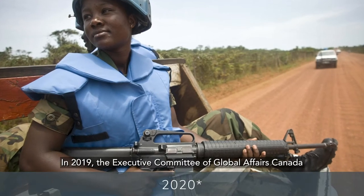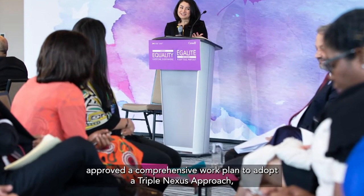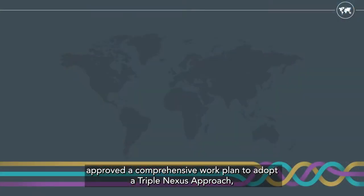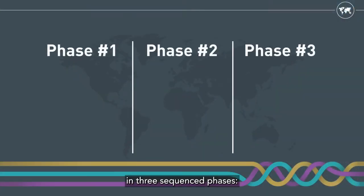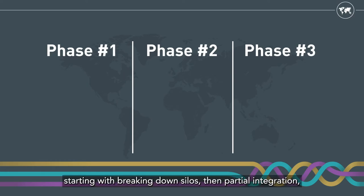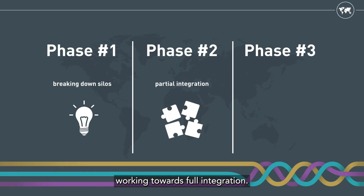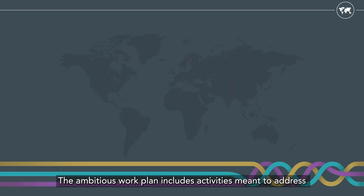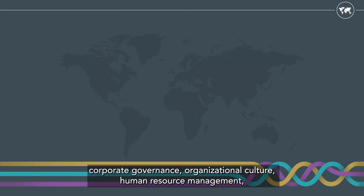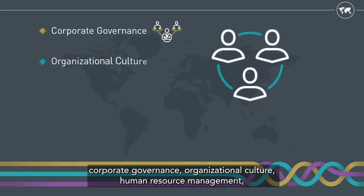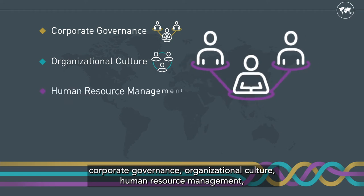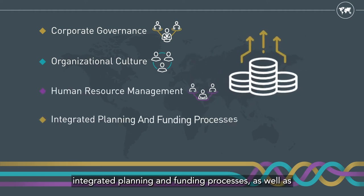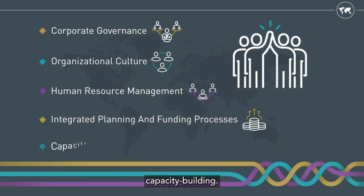In 2019, the Executive Committee of Global Affairs Canada approved a comprehensive work plan to adopt a triple-nexus approach in three sequenced phases, starting with breaking down silos, then partial integration, working towards full integration. The ambitious work plan includes activities meant to address corporate governance, organisational culture, human resource management, integrated planning, and funding processes, as well as capacity-building.